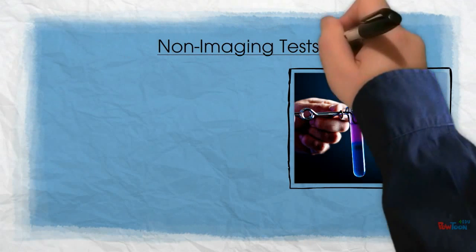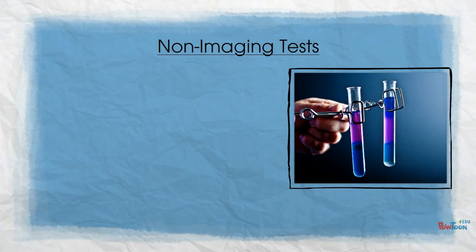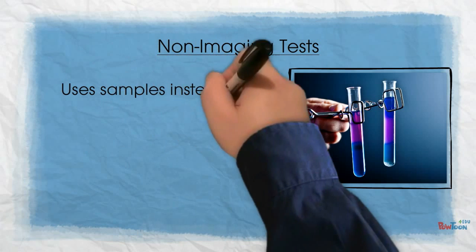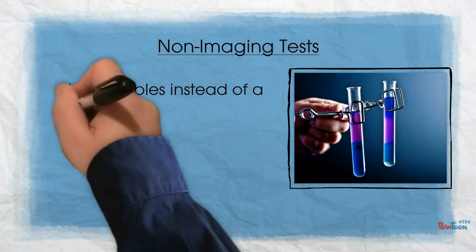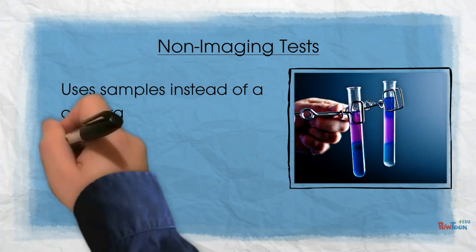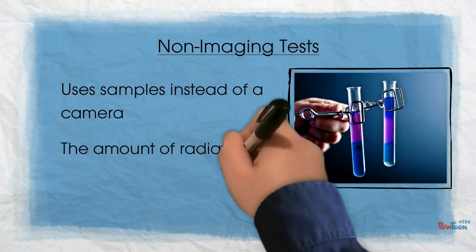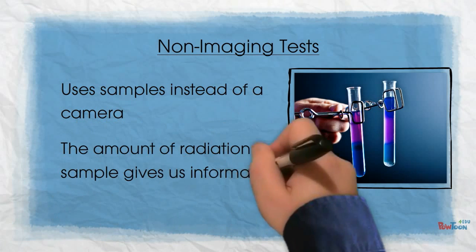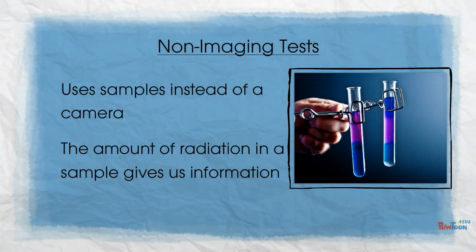In non-imaging tests, a tracer is given to a patient. However, instead of using a camera, we take samples from the patient, such as urine, blood or breath samples, depending on what we are interested in monitoring. We can measure how much radiation is in the sample to give us information about the patient.